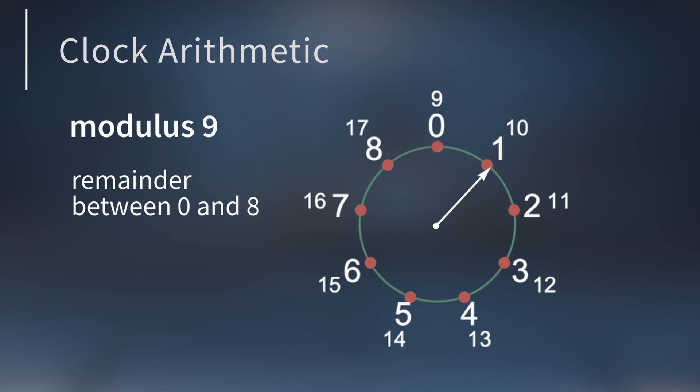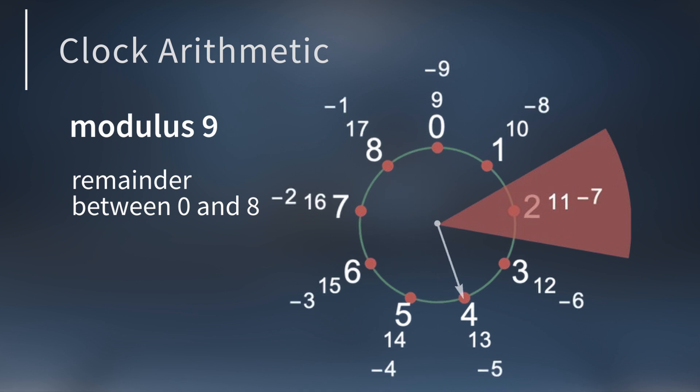We keep counting up and writing each number next to the corresponding remainder. With this technique, each positive integer appears next to its remainder. So each sector of the clock contains the numbers in each congruence class. And if we start at 0 and count down by going counterclockwise, we can place each negative integer into the correct congruence class.